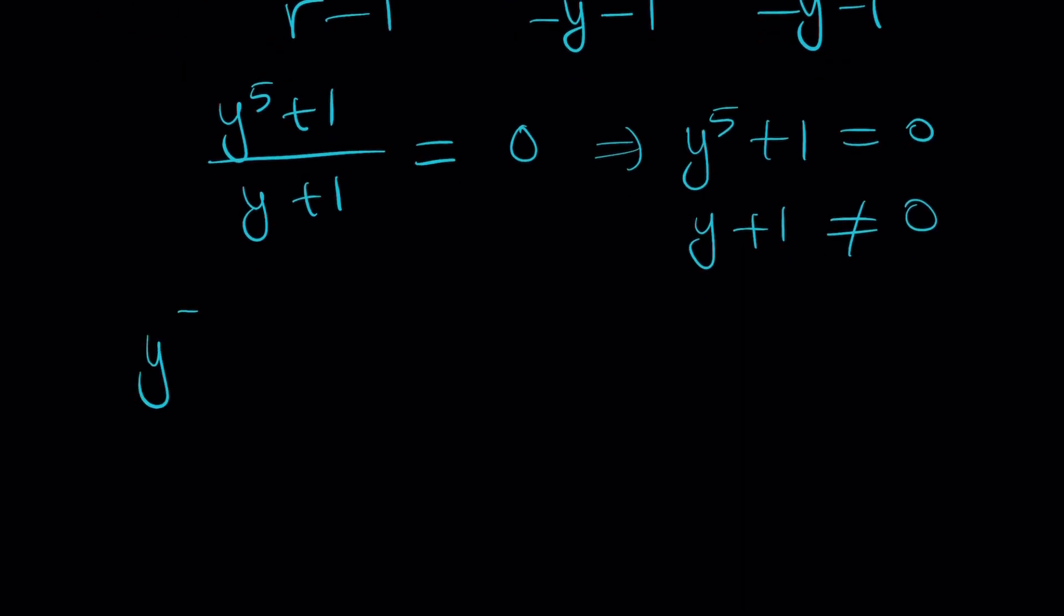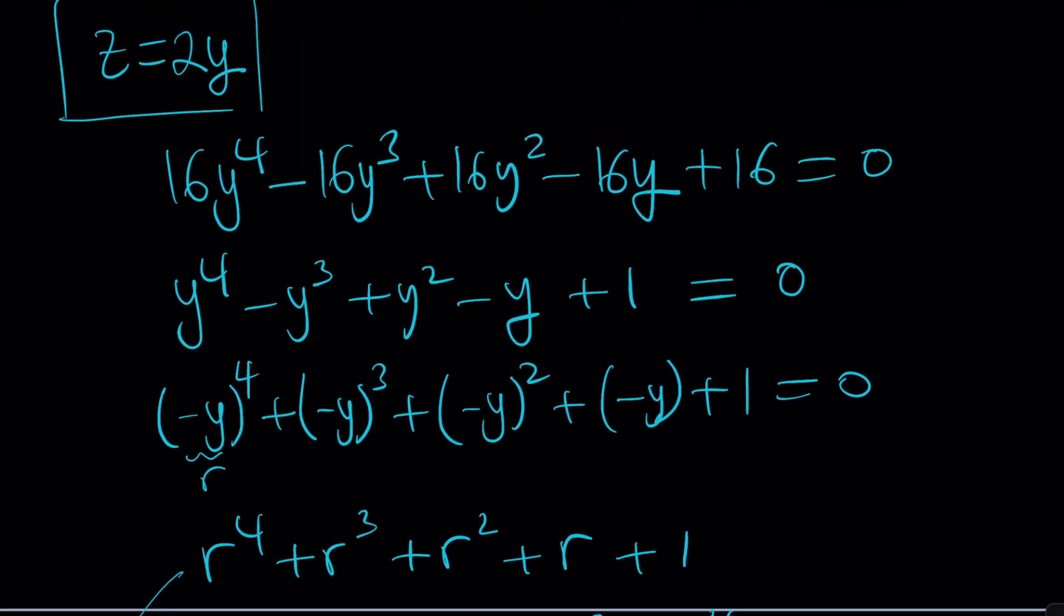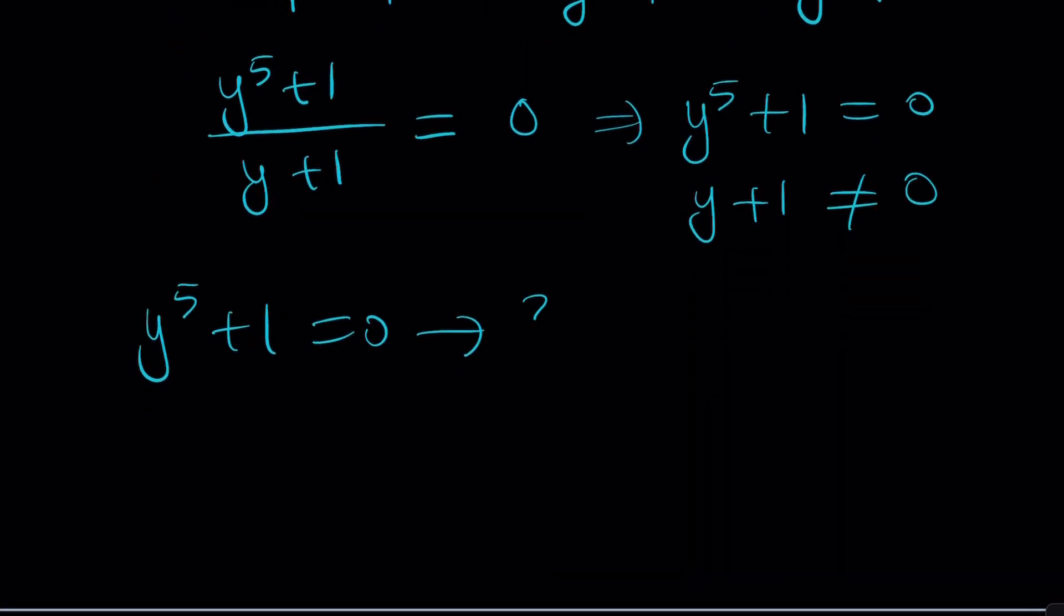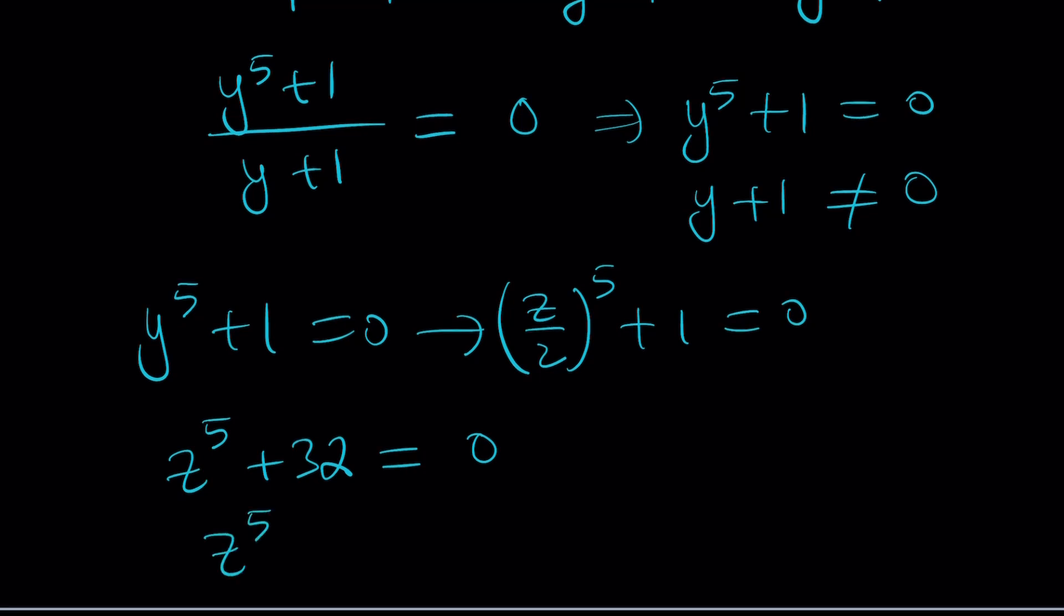We get y to the fifth plus 1 equals 0. Now what is y? We called z equals 2y, so y is just going to be half of z. z to the fifth power plus 1 equals 0. By making a common denominator, we get z to the fifth plus 32 equals 0. We can write this as z to the fifth power equals negative 32. So we're looking at the fifth roots of negative 32. But notice z should not equal negative 2.